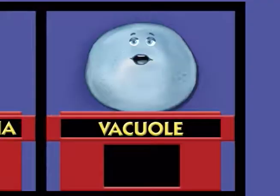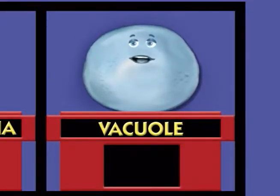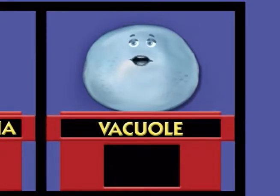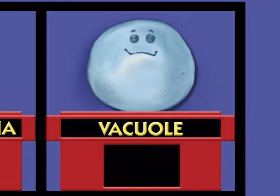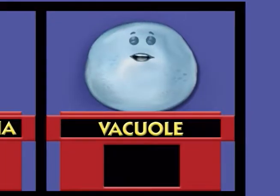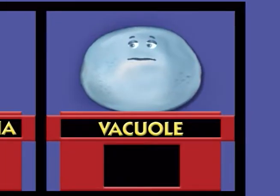Jenna, your turn. I pick vacuole. Okay, vacuole. What does a plant cell have that an animal cell does not? I would have to say that a plant cell has a cell wall and chloroplast, and an animal cell does not.